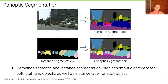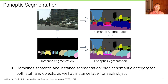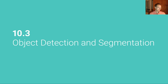One task that combines semantic segmentation with instance segmentation is called panoptic segmentation. The goal is to predict for each pixel both the semantic category — for both stuff and objects — as well as the instance label if there is an object below that pixel.